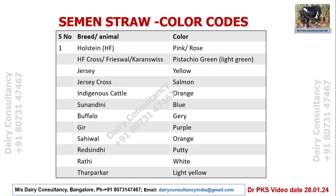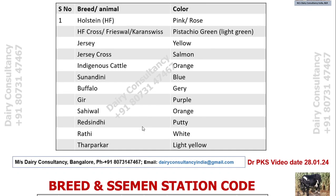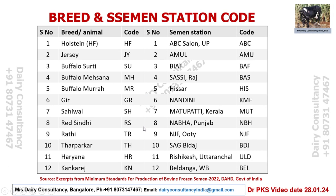Before going into detail, let's look at the semen straw color coding used for breeding purposes. Holstein Friesian has been given a pink or rose color, so if you see a pink-colored semen straw it is HF. Similarly, Gir animals are coded purple, and Sahiwal is orange. All these codes have been defined by the Government of India for semen stations, which are required to follow them. Both breed codes and semen station codes are defined.